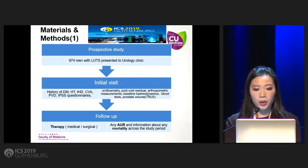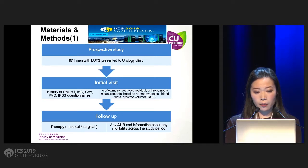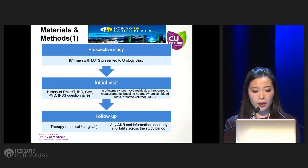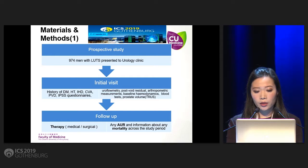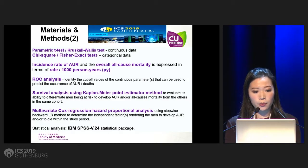In this prospective study, 974 men presented to our clinic. At the initial visit, a detailed history was taken and questionnaires filled out. We had baseline blood tests, uroflowmetry, post-void residual, urodynamic measurements, and prostate volume taken. They were followed at our clinic, and we noted whether therapy — medical or surgical — was carried out. From our database, we collected information on occurrence of acute urinary retention and mortality across the study period. Incidence rate is expressed in terms of rate per 1,000 person-years.